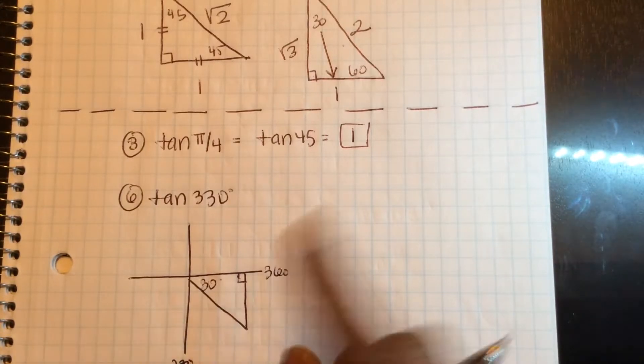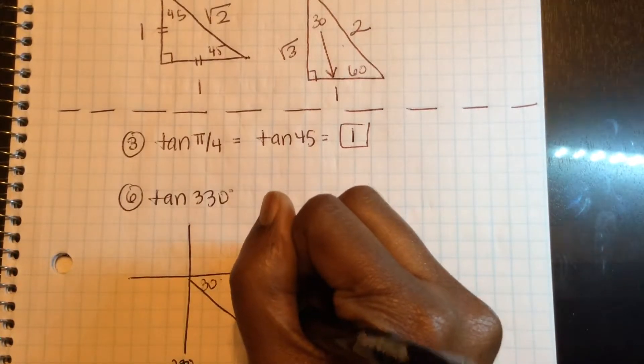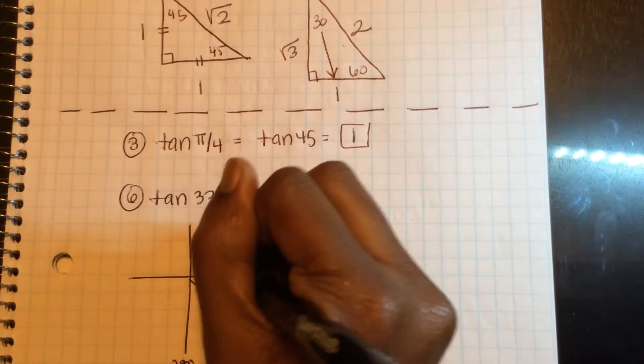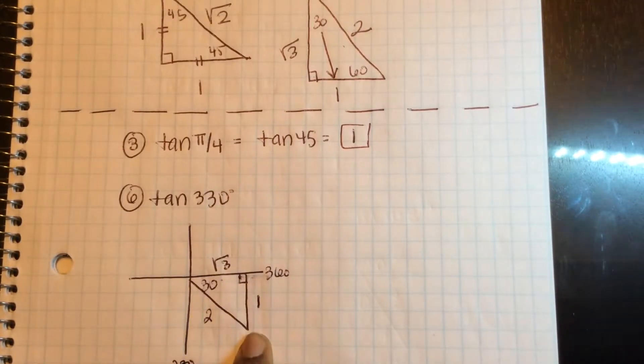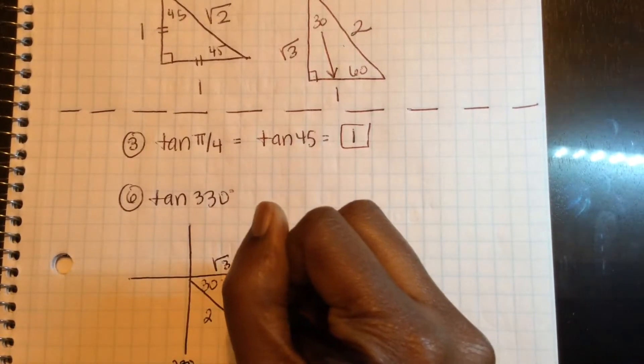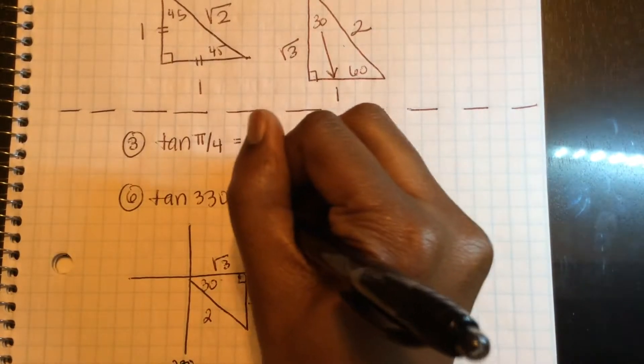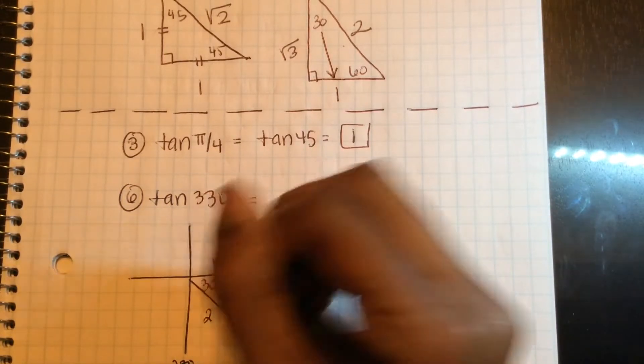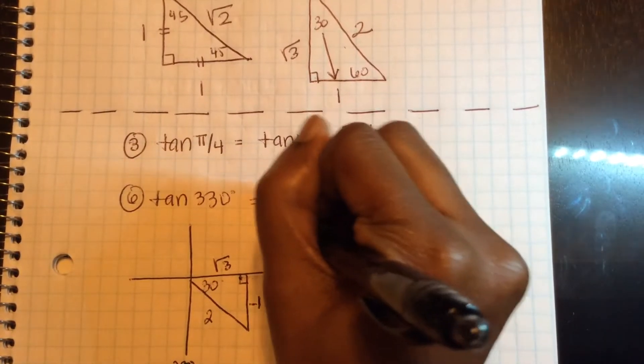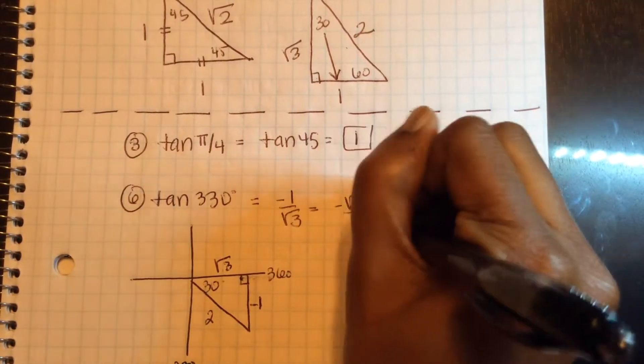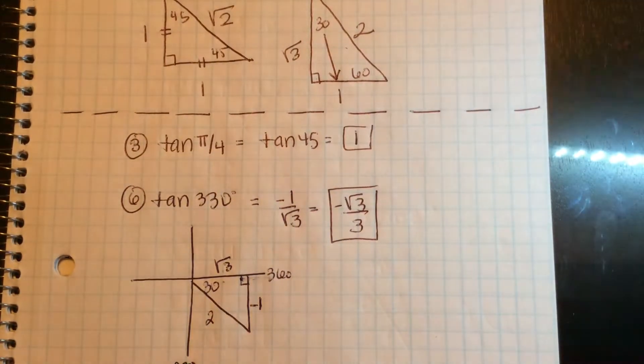So if I think about my 30, this is opposite as 1, this is 2, this is square root 3. This is positive, this is positive. Actually, this would be negative 1 because it's coming down. So tangent of 330 is opposite over adjacent, negative 1 over square root 3, which is negative square root 3 over 3.